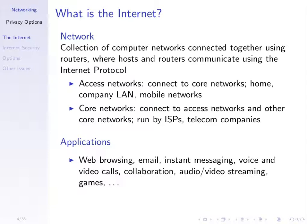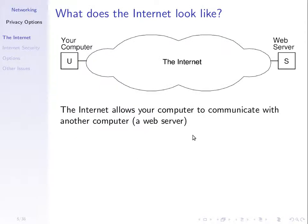We know the internet is made up of a collection of networks, and there are many different internet applications. We can think of you at one endpoint, and if we consider web browsing as the example, you want to access a web server. We know we use HTTP to do that normally — we send a request to the web server for a web page, and the server sends back that web page.